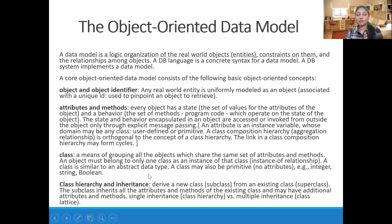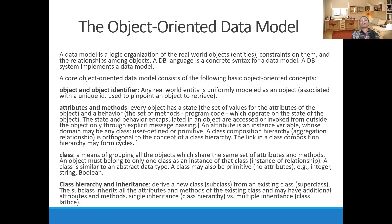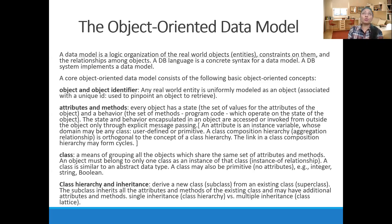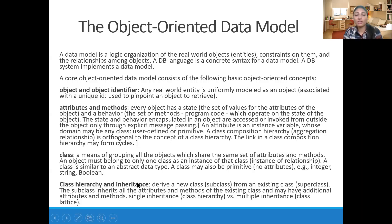A class which has no attributes is called a primitive class. For example, integer, string, and boolean are primitive classes. If we use basic data types like integer, string, or boolean rather than creating a user-defined data type, we call it a primitive class.